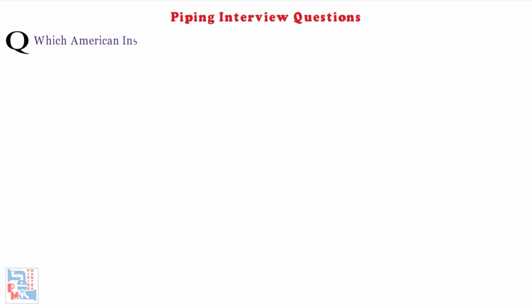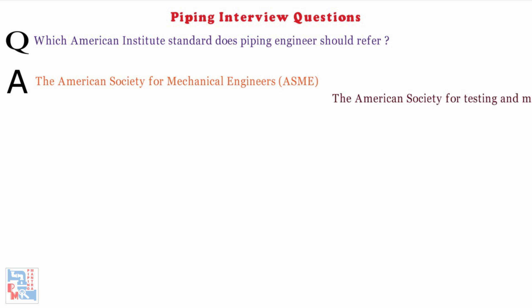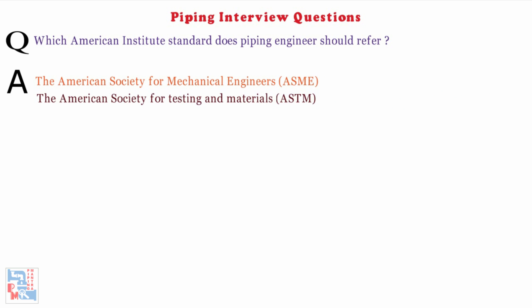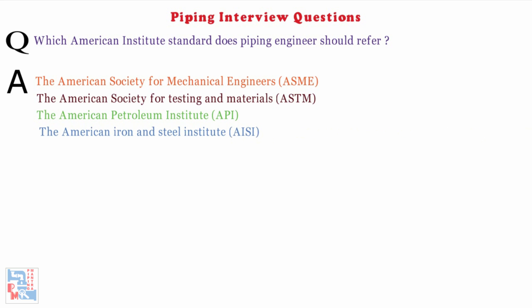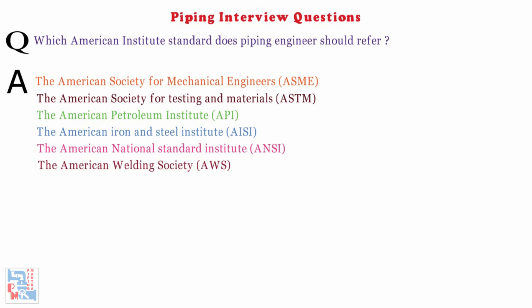Which American Institute standards should a piping engineer refer to? The American Society of Mechanical Engineers (ASME), the American Society for Testing and Materials (ASTM), the American Petroleum Institute (API), the American Iron and Steel Institute (AISI), the American National Standards Institute (ANSI), the American Welding Society (AWS), and the American Water Works Association (AWWA).